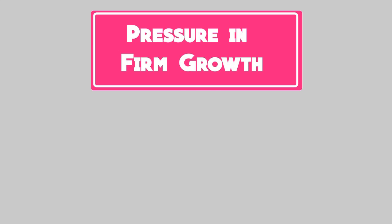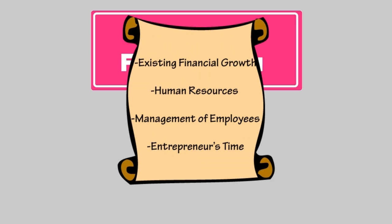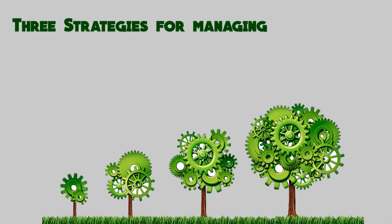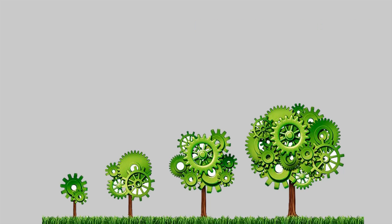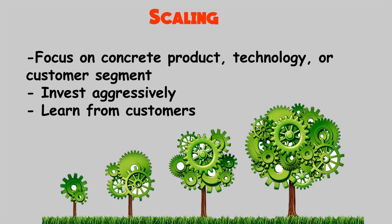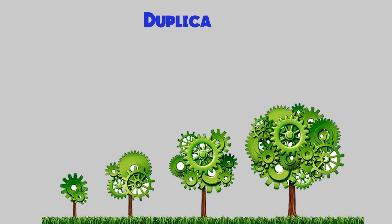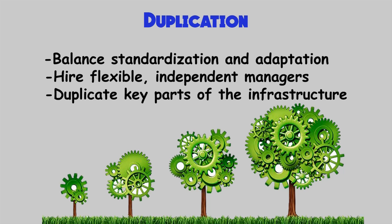The growth has 4 types of pressure. There are 3 strategies for managing fast growth: 1. Scaling, 2. Duplication, and 3. Granulation. Scaling is focused on concrete product technology or customer segments. Duplication is balanced standardization and adaptation.